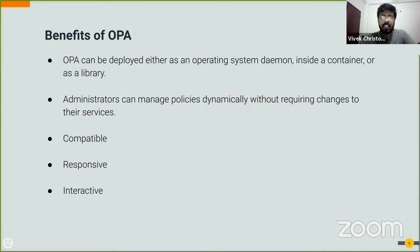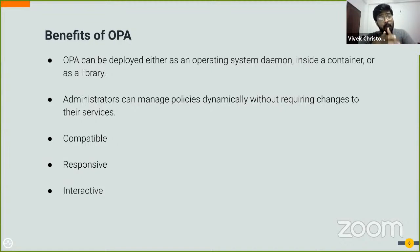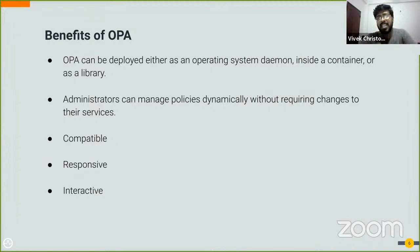Netflix and many other giants use OPA because it is easily deployable with zero deployment dependencies. It can be run as an operating system daemon, and for languages like Go it is available as a library. Administrators don't need to change services when a policy changes — they can simply update the policy and make it production-ready, leading to very effective and efficient policy management.